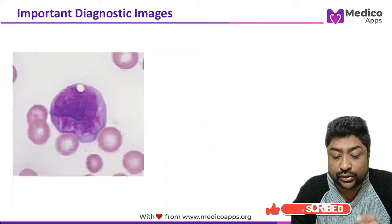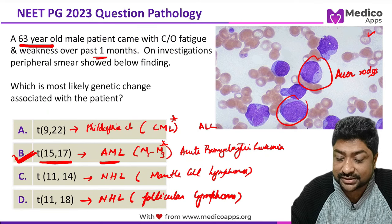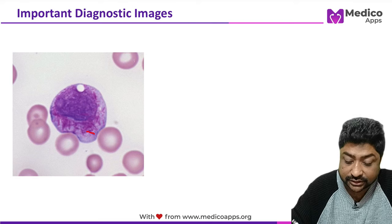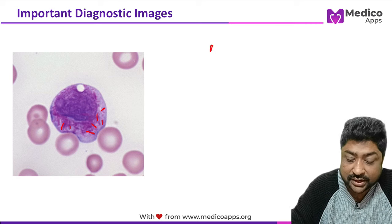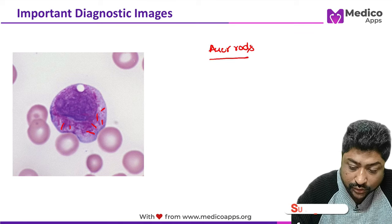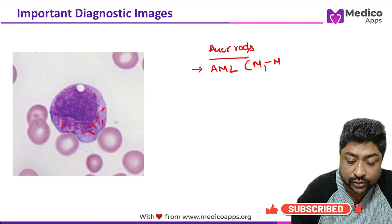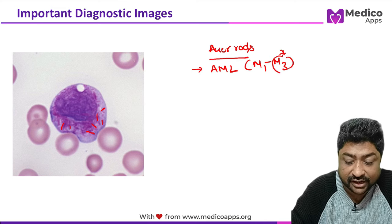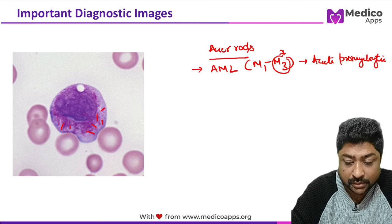Looking more closely, this magnified image shows cytoplasmic inclusions called Auer rods. They are seen in AML across subtypes M1 to M3, but primarily in M3, which is acute promyelocytic leukemia.